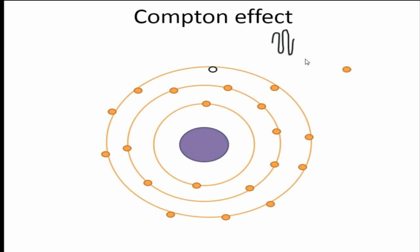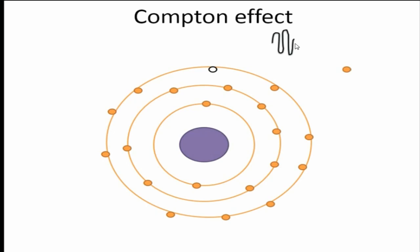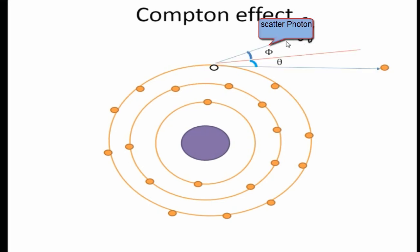In the Compton effect, the electron is ejected at a particular angle and the photon is also scattered at a particular angle. The ejected electron is called the Compton electron and the scattered photon is called the scattered photon. The scattered photon angle is represented by phi, and the ejected electron angle is represented by theta.